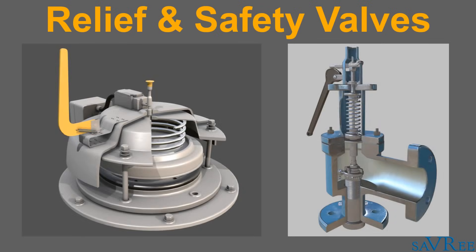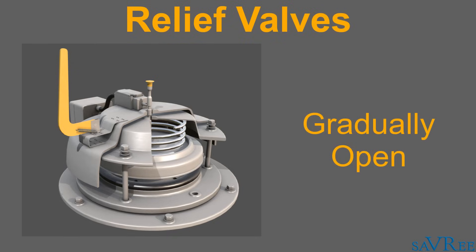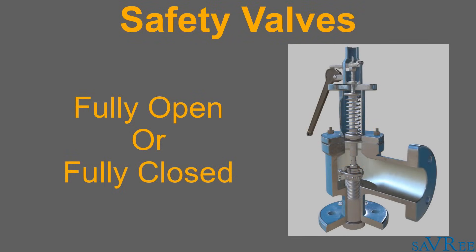Relief and safety valves prevent equipment damage by relieving accidental system over-pressurization. A relief valve gradually opens as the inlet pressure increases above the set point, opening only enough to relieve the over-pressure condition. Whereas a safety valve rapidly pops fully open as soon as the pressure setting is reached, and it will stay fully open until the pressure drops below a reset pressure.